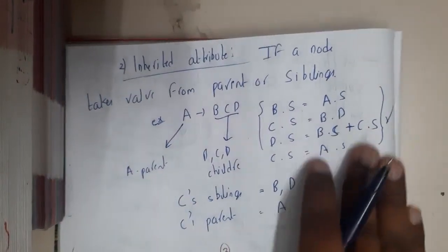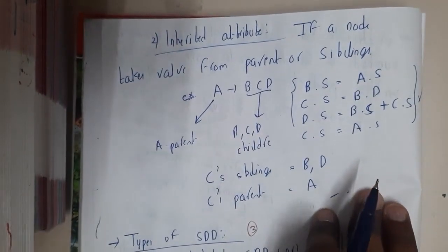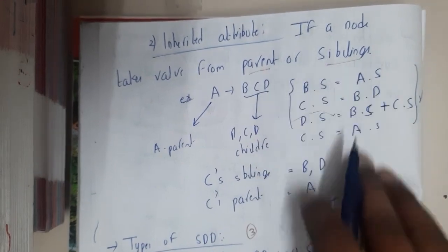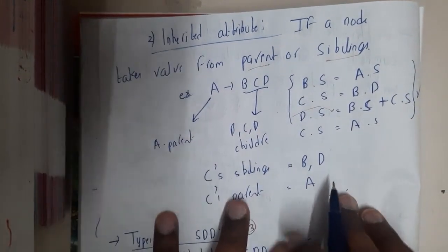Similarly, for inherited attributes, everyone will be saying that it's from the parent. But along with the parent, there is one more thing - it can take the values from its siblings also.